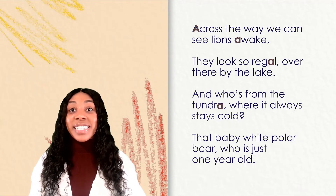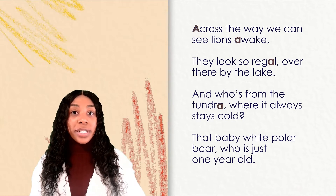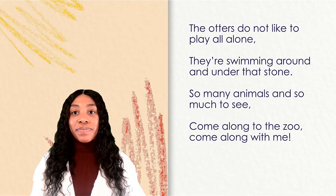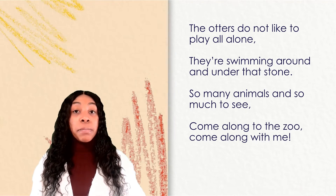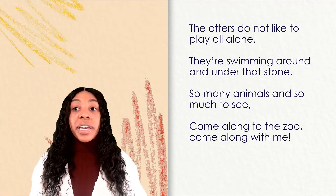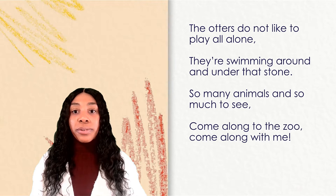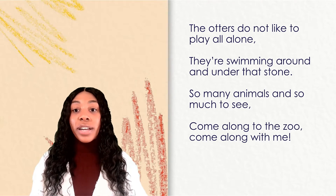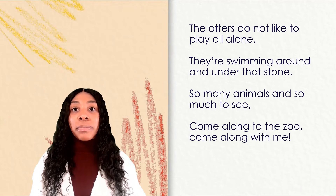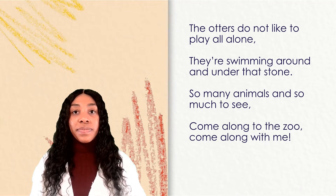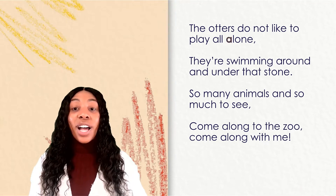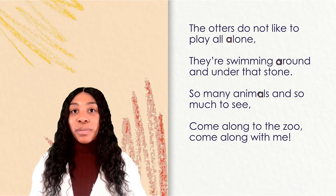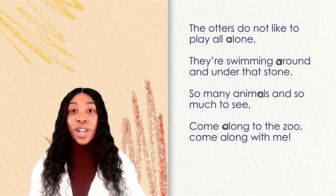Let's keep reading to see if we can spot more words with the uh sound. The otters do not like to play all alone. They're swimming around and under that stone. So many animals and so much to see. Come along to the zoo. Come along with me. I see alone, around, animals, and along.